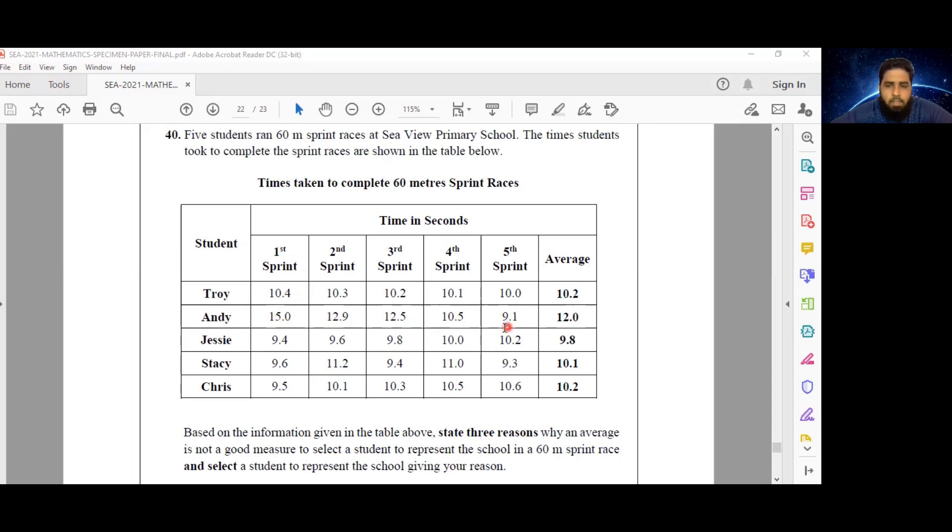And further to that, he also has the lowest sprint time or the fastest sprint time of all of the potential candidates for this race, even though his average is not the best. He has had the most improvement and ultimately he has run the fastest 60-meter sprint. So therefore, I would pick him.